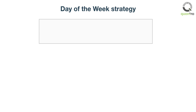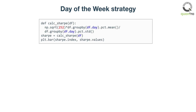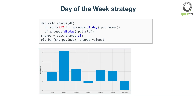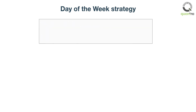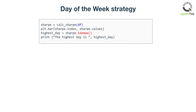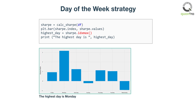Define a function to compute the Sharpe ratio, based on the mean and standard deviation of daily returns for each day. Call the function for the past 60 days and determine the day with the highest Sharpe ratio using the idxmax function.